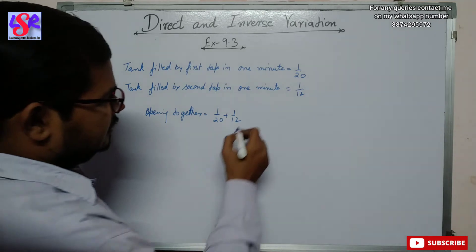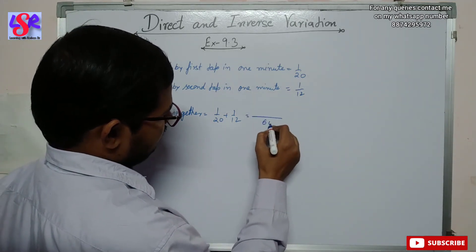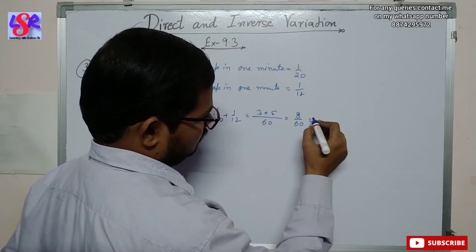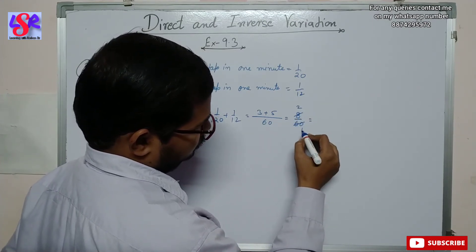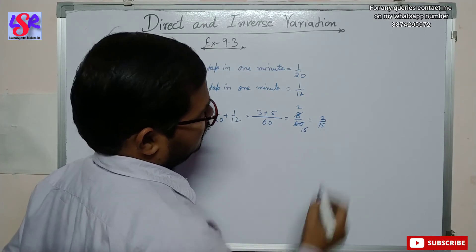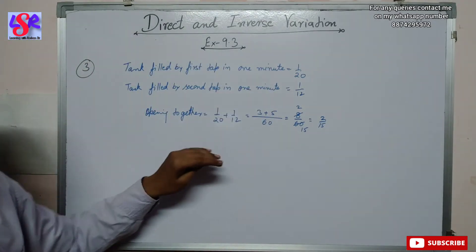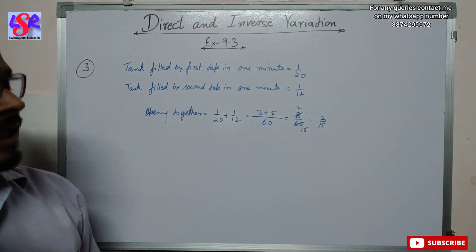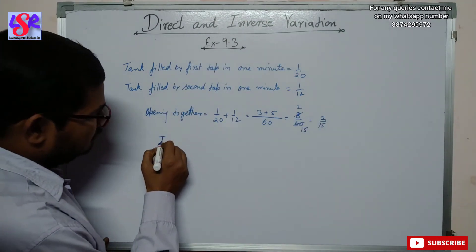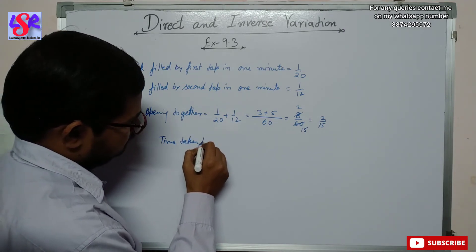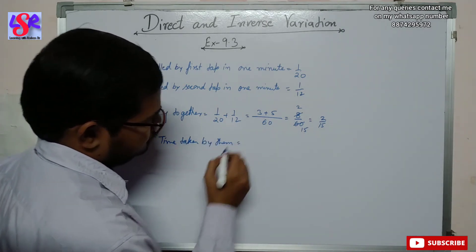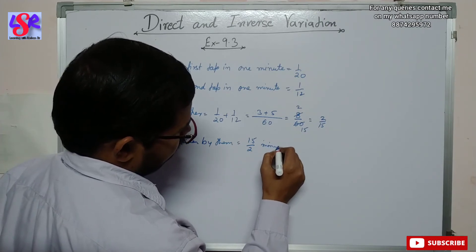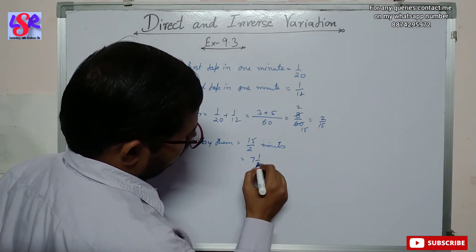Opening both taps together gives one upon twenty plus one upon twelve. Taking sixty as LCM — twenty goes three times and twelve goes five times — that equals eight upon sixty. Simplifying, dividing by four gives two upon fifteen. So two-fifteenths part of the tank is filled per minute when both taps are open. The time taken to fill the tank will be fifteen upon two minutes.